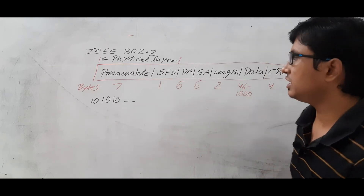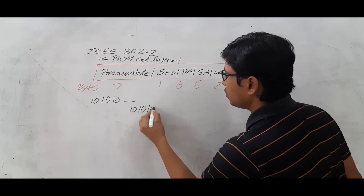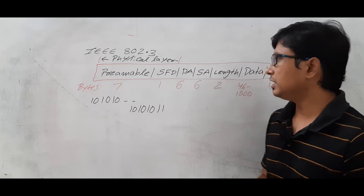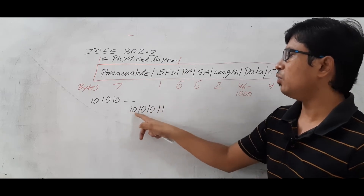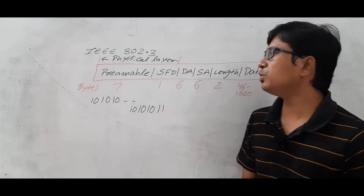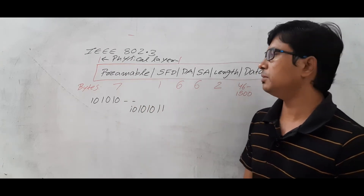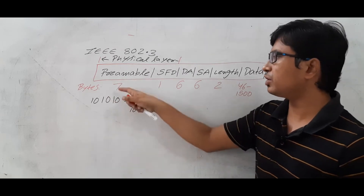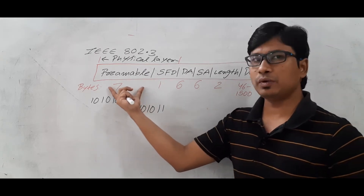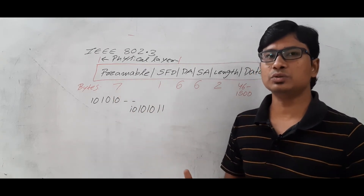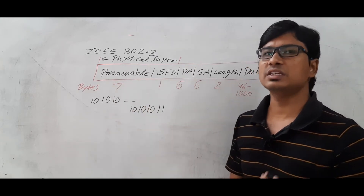Coming to the SFD, the start frame delimiter has the pattern 10101011, because it is 8-bit information — one byte is 8 bits. Now what is the use of the preamble and the start frame delimiter? The preamble is useful to synchronize the sender and receiver. Whenever you are transferring data, you need to synchronize the sender and receiver. So the preamble is useful for synchronization purpose.